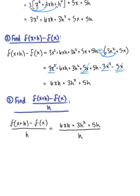Notice that in the numerator, each term has a greatest common factor of h. Factoring that h out, we now have h multiplied by 6x plus 3h plus 5, and this is all divided by h.